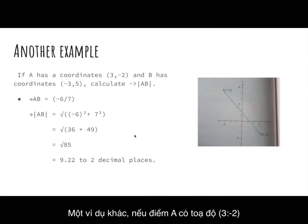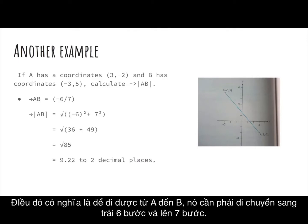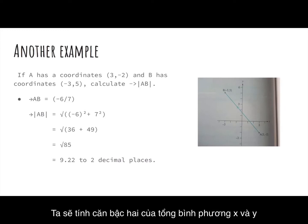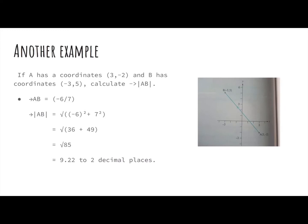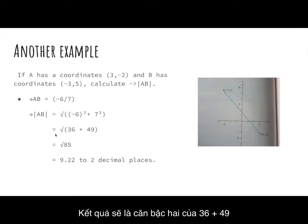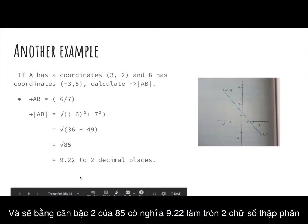If A has coordinates (3, −2) and B has coordinates (−3, 5), we need to calculate the magnitude of vector AB. Vector AB equals (−6, 7), meaning to get from A to B it needs to move left 6 and up 7. So the magnitude |AB| equals the square root of (−6)² plus 7², which equals the square root of 36 plus 49, which equals the square root of 85, which equals 9.22 to 2 decimal places.